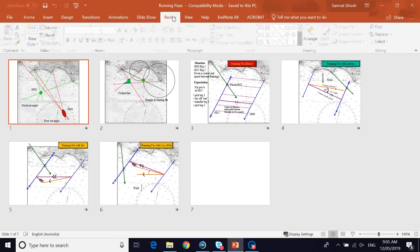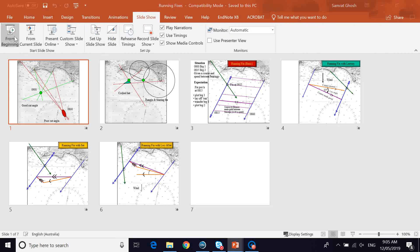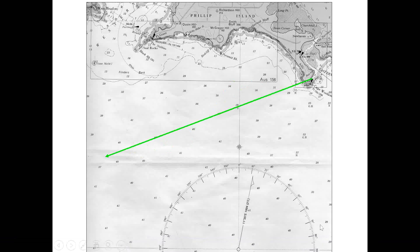Today we'll be talking about plotting the ship's position using position lines, transferring of position lines, and particularly the concept of running fix. Position lines can be drawn on the basis of coastal or celestial observations. We'll focus on coastal here today because we're talking about chart work.